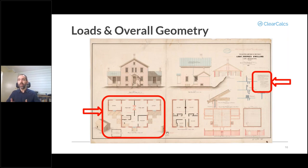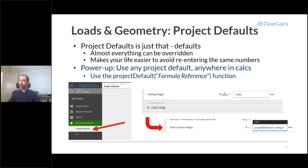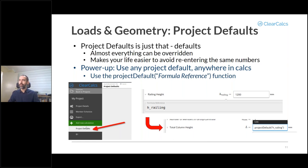Once you've created and set up your project, you'll want to look at the loads and overall geometry. Loads are probably going to be based around all the notes on your plan documents — the address, site conditions, proximity to the coastline, and the overall building dimensions. For this we'll mostly be looking at project defaults. Project defaults exist in any project you create and are just that — defaults. Almost everything in them can be overridden in any individual calculator you create. They're just meant to make your life easier.